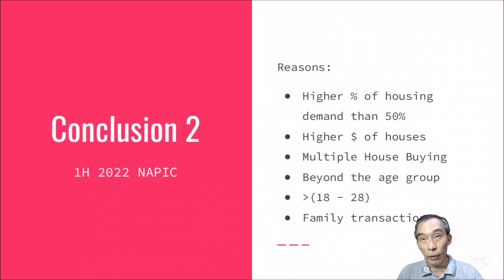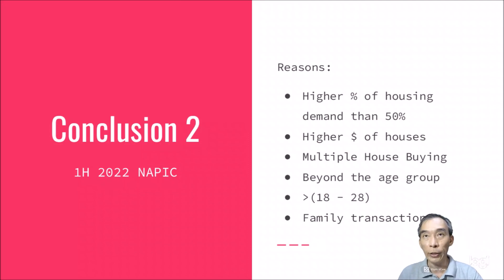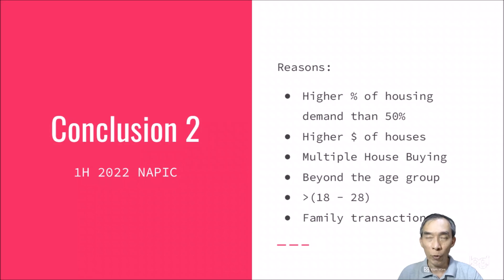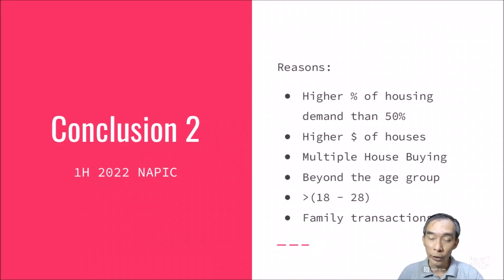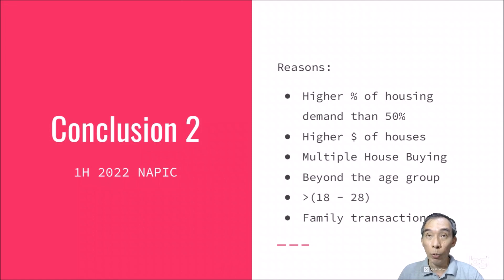Another reason is the limitation of focusing only on the 18–28 age group. People aged 38 or 48 are still buying houses, so the broader age group should also be included. The 1.4 million voters aged 18–20 may not reflect the actual population buying houses across the nation, and the 18–28 age group may in fact be a relatively minor segment in terms of actual purchasing power.